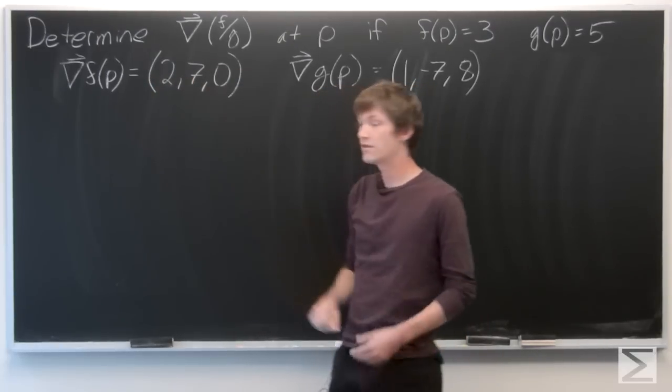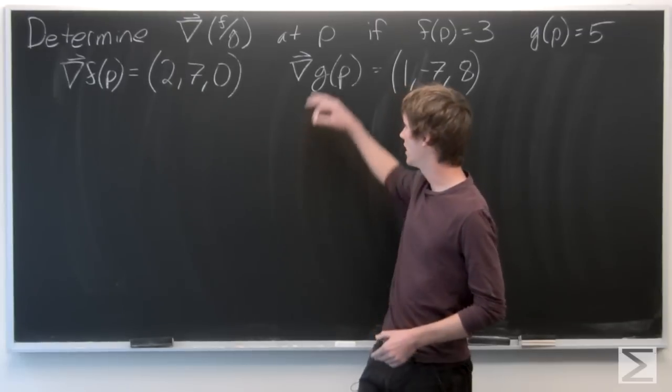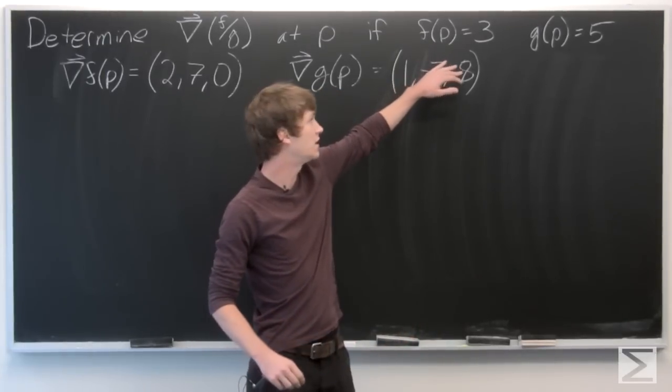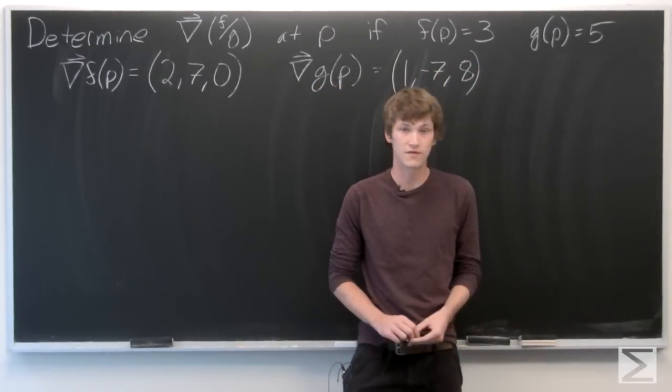In this problem, we're asked to determine the gradient vector of f over g at the point p. If we're given that f of p equals 3, g of p equals 5,